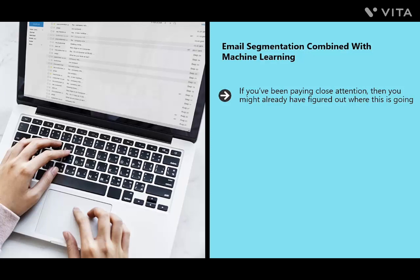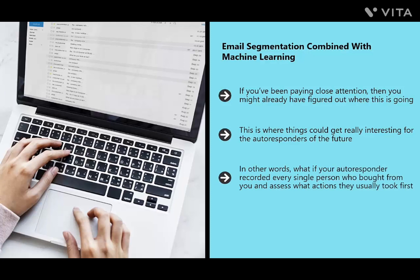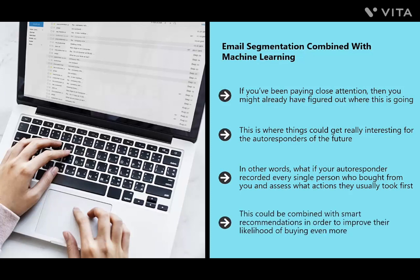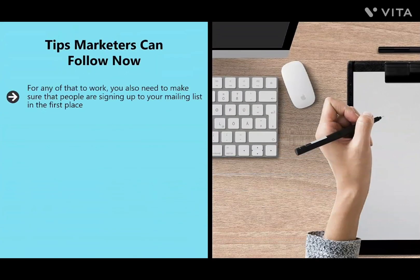You can see who has hovered on your products and been tempted to click buy. Combine email segmentation with machine learning and you can use predictive analytics to better rate leads. Imagine if your autoresponder not only segmented your audience by open rates, but could also look for trends across huge data sets — recording every single person who bought from you, assessing what actions they usually took first, and thereby spotting when a user is behaving like someone ready to buy, then sending a tailored message to encourage that purchase.